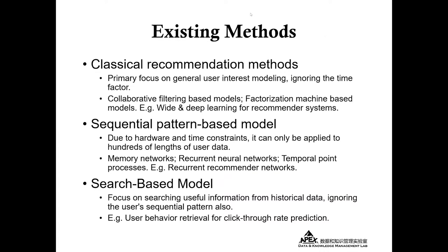We broadly classify them into three categories. The first is some traditional recommendation methods. They are mainly devoted to general user interest modeling and ignored time factors. There are collaborative filtering-based modules and factorization-based modules like wide and deep learning for recommended systems.